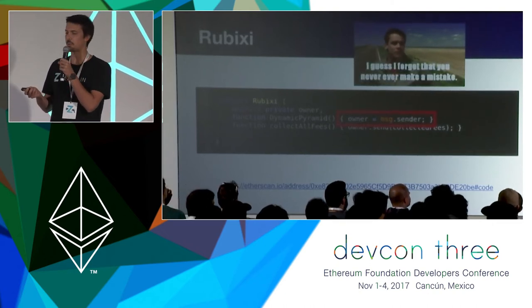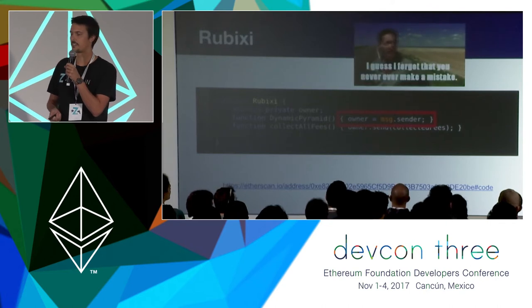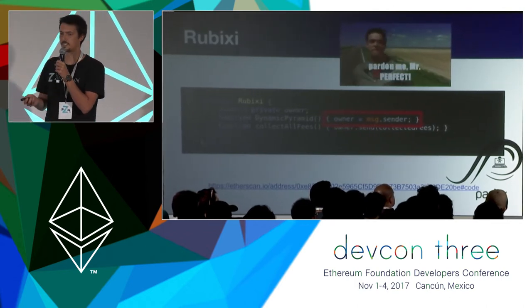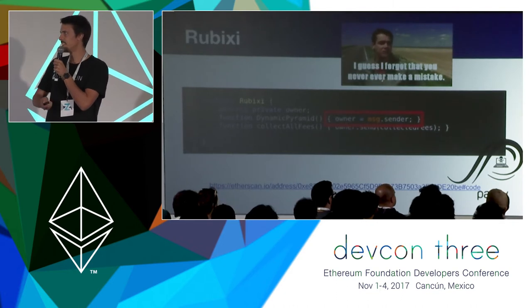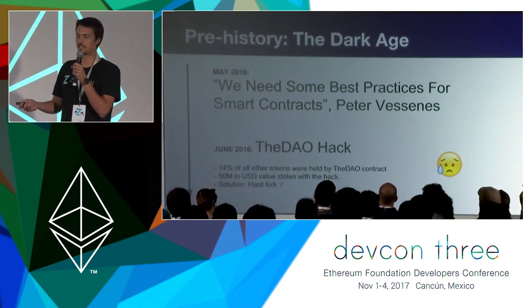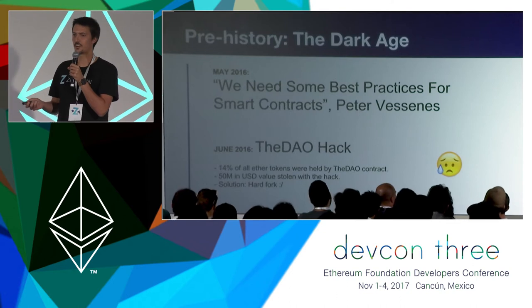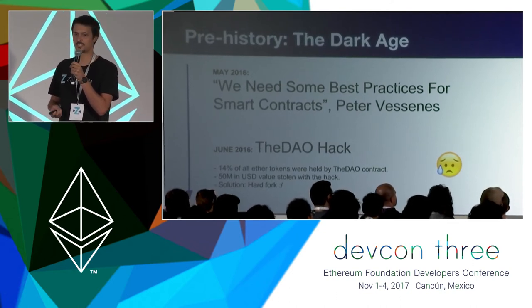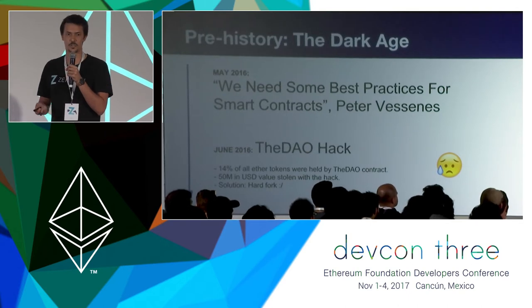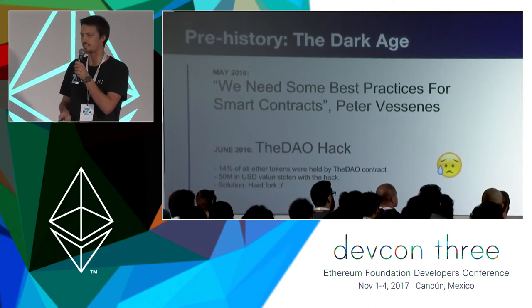Gaining ownership of the contract and being able to steal the fees from the contract. This seems like a dumb mistake, but this same feature from Solidity probably caused the Parity wallet hack which happened recently and cost like 30 million dollars to be lost to hackers. In May 2016, Pieter Snis wrote a great article calling the community to gather around building best practices for smart contract development. One month later the DAO hack occurred — the contract held roughly 15% of all ether tokens in existence, 50 million dollars were lost, and at that time the only solution was to hard fork the protocol, which brought a lot of complications and security problems.